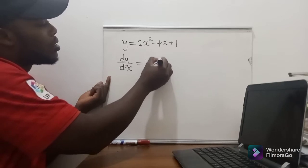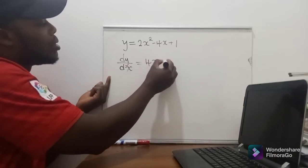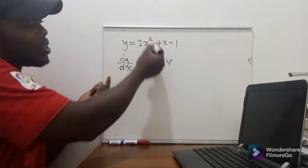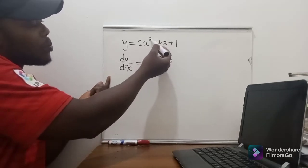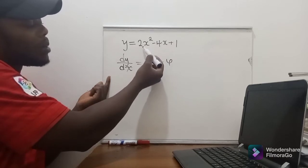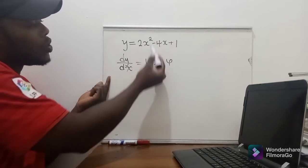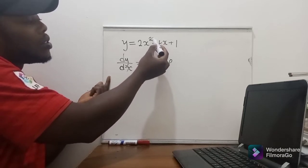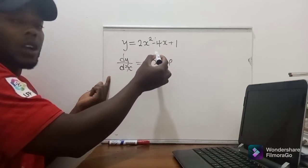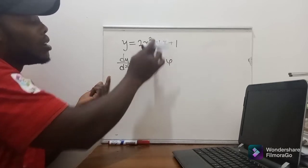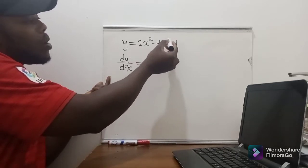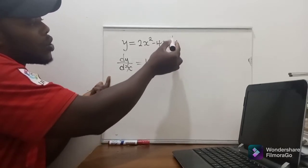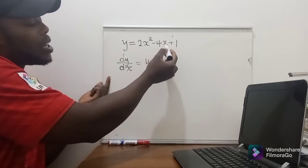4x minus 4. Okay, so this is the derivative. I've just multiplied this power by the number that is in front, which is 2 by 2 gives me 4, and then to the power which is here, subtract 1. So it will be power 1. 1 times negative 4 is negative 4, and then you subtract 1, it will be power 0. So this x to the power 0 will just be 1, so 1 multiplied by this will just be negative 4.